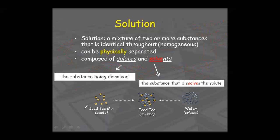Let's take the example of iced tea. You take one pouch of iced tea mix as the solute and dissolve it into water. Water is the solvent because you are dissolving everything in water. Water is also called the universal solvent, as we studied in the previous class. The iced tea mix is infused into the water to give iced tea — iced tea is the solution, water is the solvent, and iced tea mix is the solute.